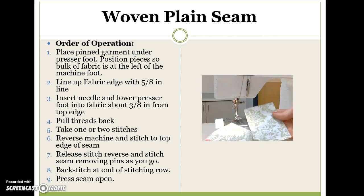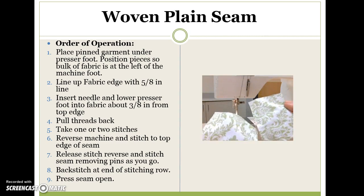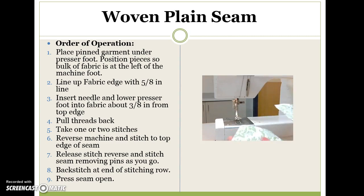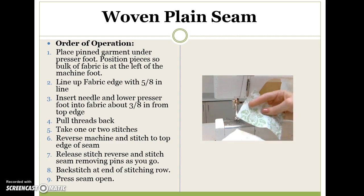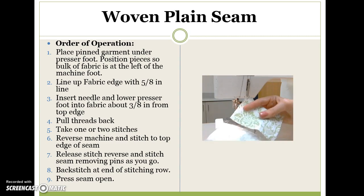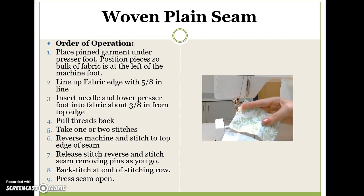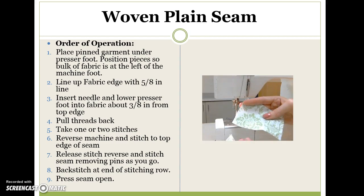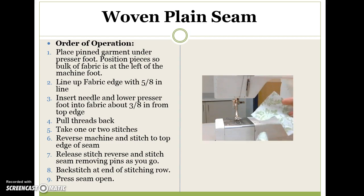Right now we are going to use two 3x4 pieces of fabric. Something to keep in mind is which side is the right side and which side is the wrong side. The right side is usually more vibrant whereas the wrong side is more dull. The pattern is often times printed on the top, but if the print is woven in, then it does not usually matter as much.